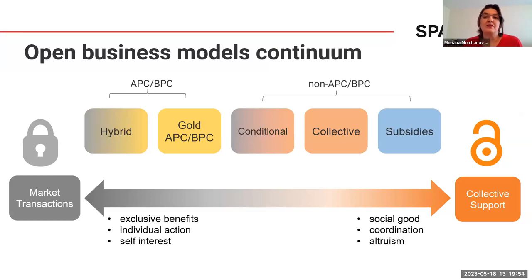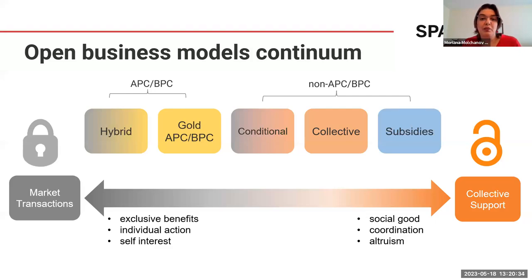You can place those basic open business models in what we call the open business model continuum, which flows between market transactions and collective support. Market transactions are defined by exclusive benefits, individual action, and self-interest. On the other end of the spectrum, collective support is defined by the creation of social good — it requires coordination and often relies on altruism. The models using APC/BPC are closer to market transactions; the others may require aspects of collective support.